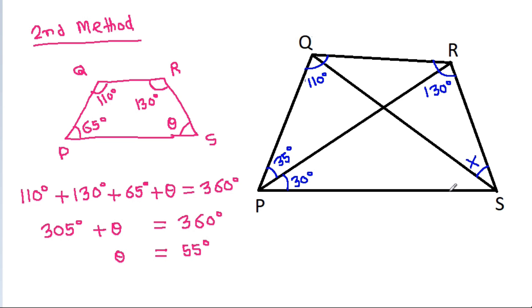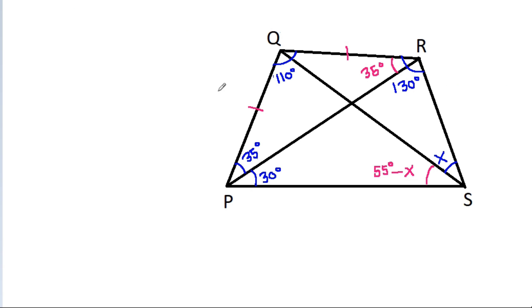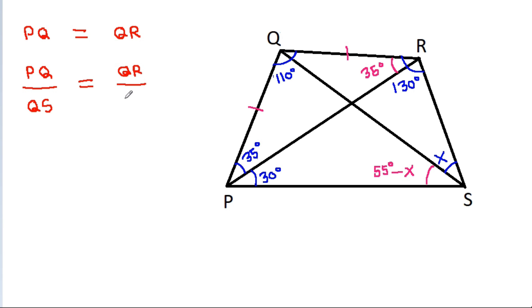This angle RSQ is X, which means angle PSQ will be 55 degrees minus X. We have calculated that angle QPR equals angle QRP, that is 35 degrees, which means PQ equals QR. So PQ divided by QS equals QR divided by QS.